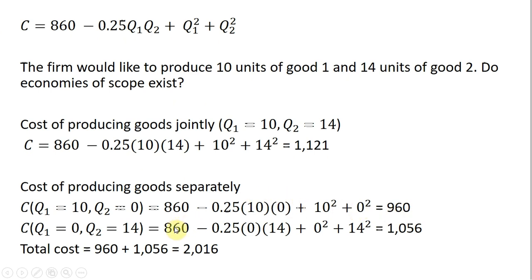And then we're going to produce the other good, Q subscript 2, in another facility. So in that example, Q subscript 1 is 0, Q subscript 2 is 14. So plugging in those values of 0 and 14, we see the cost of producing the second good in a separate facility is $1,056.